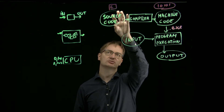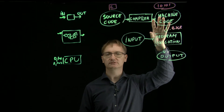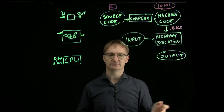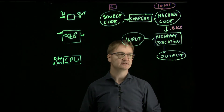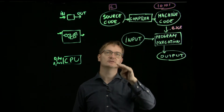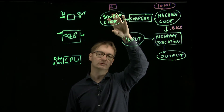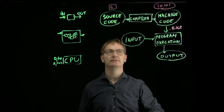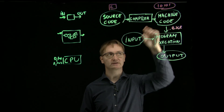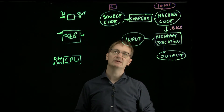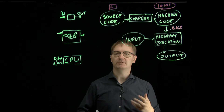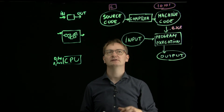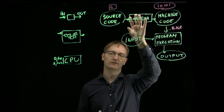The source code can be several files, the machine code can also be several files, and the program execution can also generate files such as text files. The idea is: we take all the code, compile it, and get machine code. If there are errors in your code, the compiler gives you an error and you won't get the machine code, so you find out about certain errors before you even execute the code.